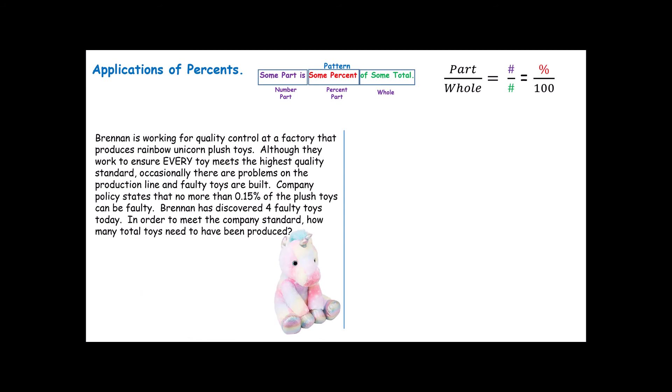Here's another one for you. Brennan is working for quality control at a factory that produces rainbow unicorn plush toys. Although they work to ensure every toy meets the highest quality standards, occasionally there are problems on the production line and faulty toys are built. Company policy states that no more than .15% of the plush toys can be faulty.